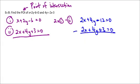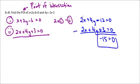Subtracting everything: 2x minus 2x equals zero, 4y minus 4y equals zero, and negative 12 minus 3 equals negative 15, with zero minus zero equals zero. So we get negative 15 equals zero, which is obviously not true. This tells us the lines are parallel — you might have noticed the slopes are the same. With elimination or substitution, getting a number equal to zero means the lines are parallel, so there is no point of intersection.